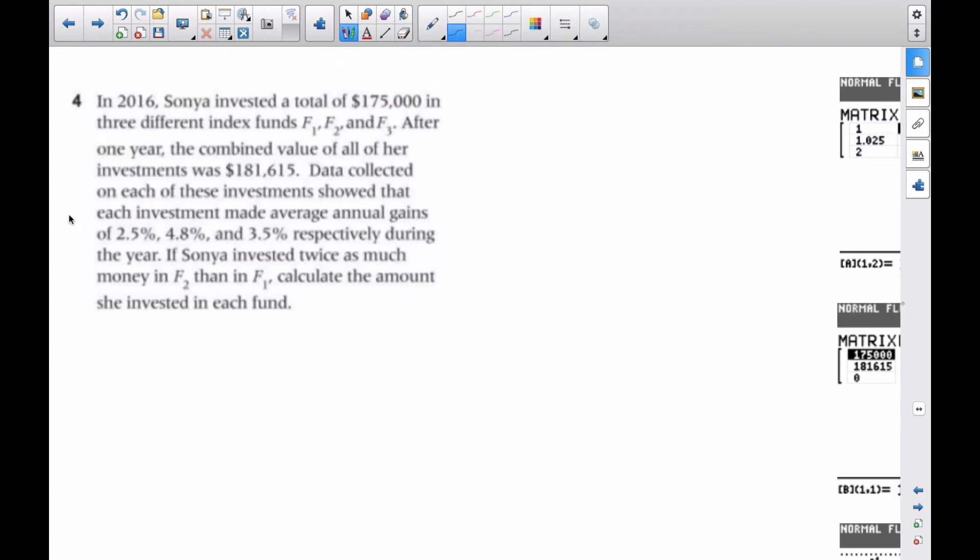Okay, it's Mr. Robson here, and we're going to solve this particular problem where Sonya invests a total of $175,000 in three different index funds: F1, F2, and F3. So I know F1 plus F2 plus F3 is $175,000.